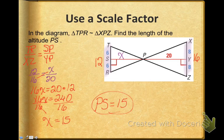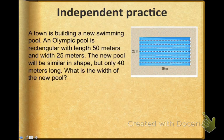All right, now there's one more problem, and it is an independent practice, but I want to talk to you about how to set it up. A town is building a new swimming pool. An Olympic pool is rectangular with a length of 50 meters and a width of 25 meters. This new pool will be similar in shape. Now notice they say the word similar. But only 40 meters long, what is the width of the new pool?